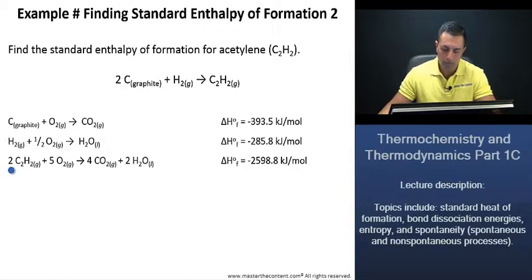Since we have one mole of hydrogen gas here, we can leave the second reaction alone. To get a mole of acetylene, we're going to need to flip the third reaction and multiply it by one half. Don't forget to make the same adjustments to your standard heat of formation values as well. I've gone ahead and made the necessary adjustments.